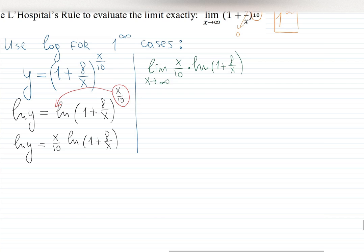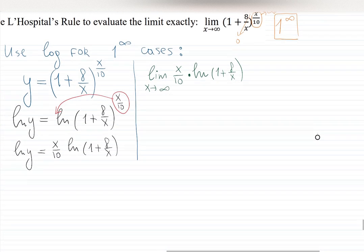Now we have product. And we know how to work with products. If we have 0 times infinity, we can fix it and it becomes 0 over 0 or infinity over infinity. And then we use L'Hôpital's rule. Let's see if this is the case. x over 10 goes to infinity. 8 over x goes to 0. 1 plus 0 goes to 1. So log of 1 goes to 0. This is infinity times 0 case.